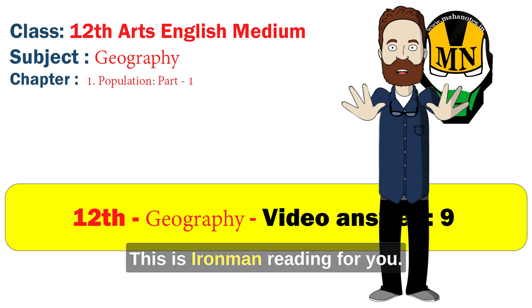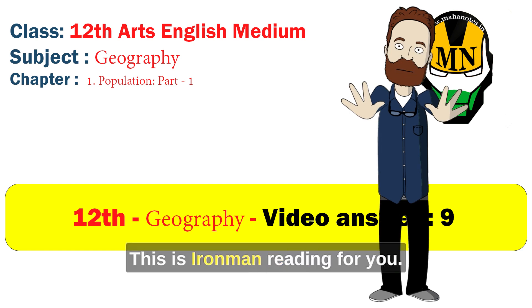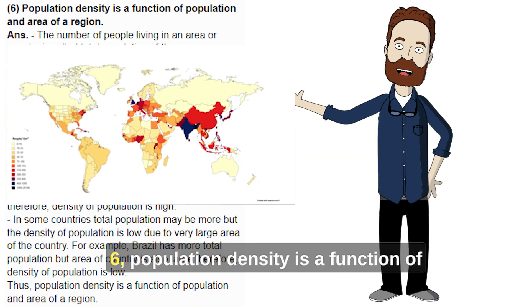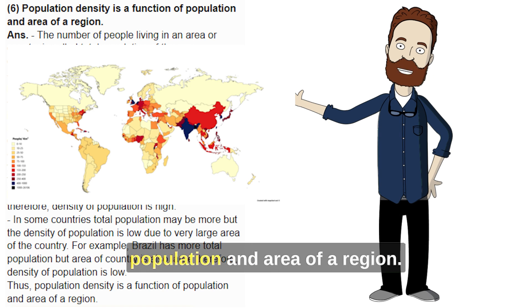Hey, this is Iron Man reading for you. Question 6: Population density is a function of population and area of a region.